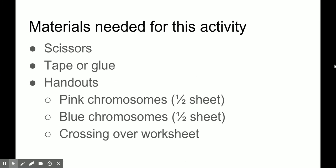First of all, the materials you need for this would include scissors, tape or glue, and the handouts. They would include those pink chromosomes, which is a half sheet, the blue chromosomes, which is a half sheet, and a white crossing over worksheet that you're going to put these on.